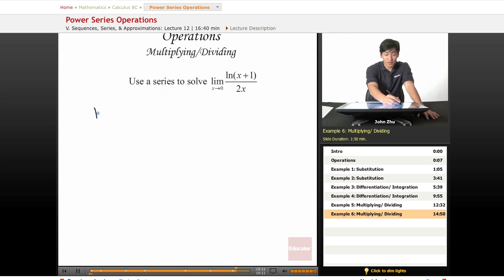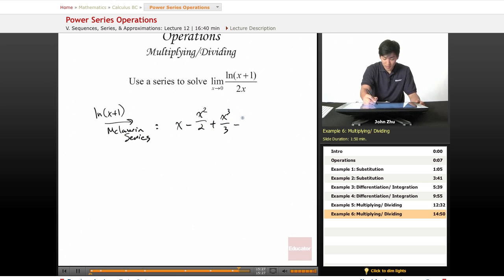well we know that the Maclaurin series of ln(x+1) is going to be x minus x squared over 2 plus x cubed over 3 minus x to the fourth over 4 and so on.